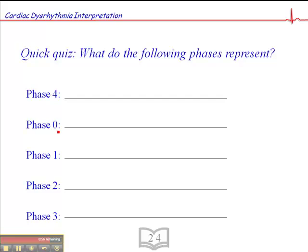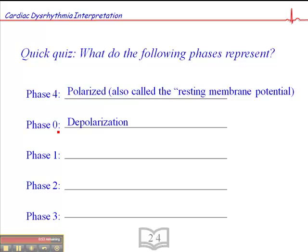So phase 4 is the polarized phase. Phase 0 is depolarization. Phase 1 is early repolarization. Phase 2, plateau. Phase 3, repolarization.